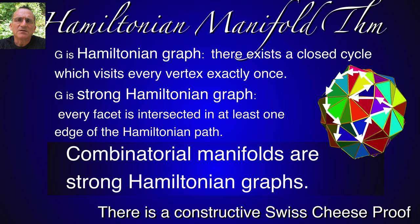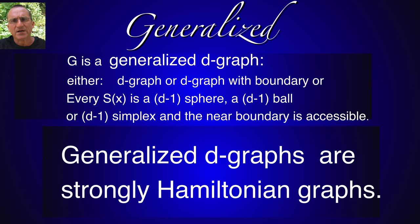The theorem tells that combinatorial manifolds are strongly Hamiltonian. This means that we can find a Hamiltonian path which intersects every facet large simplex in an edge.